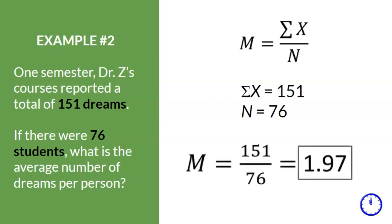So at this point, all we have to do is plug in the numbers to the formula and we get M equals 151 divided by 76, which equals 1.97 dreams.